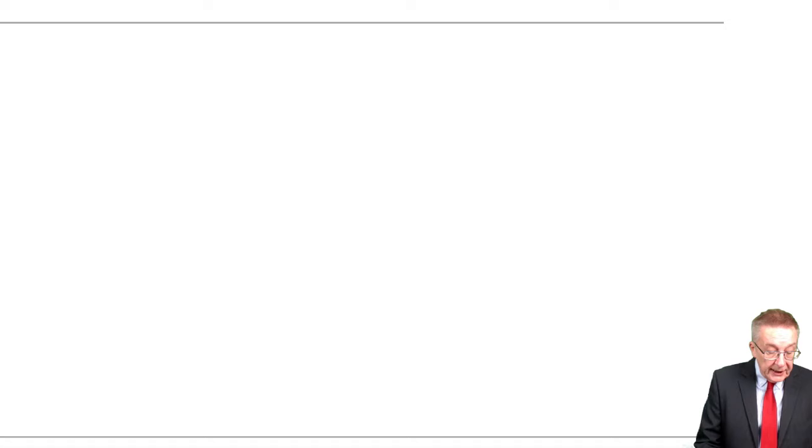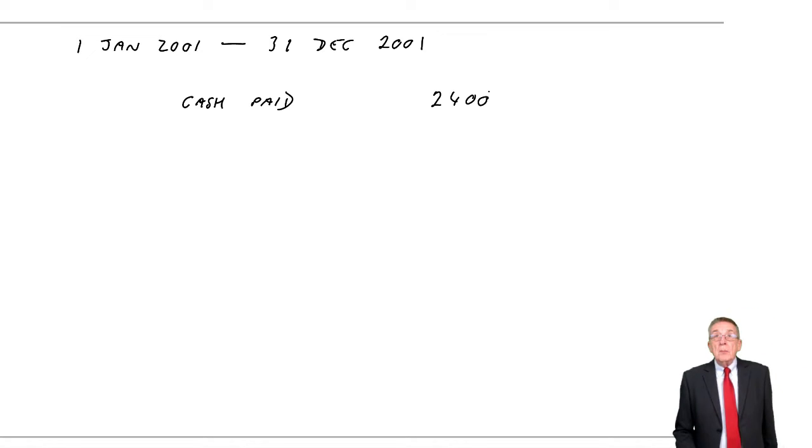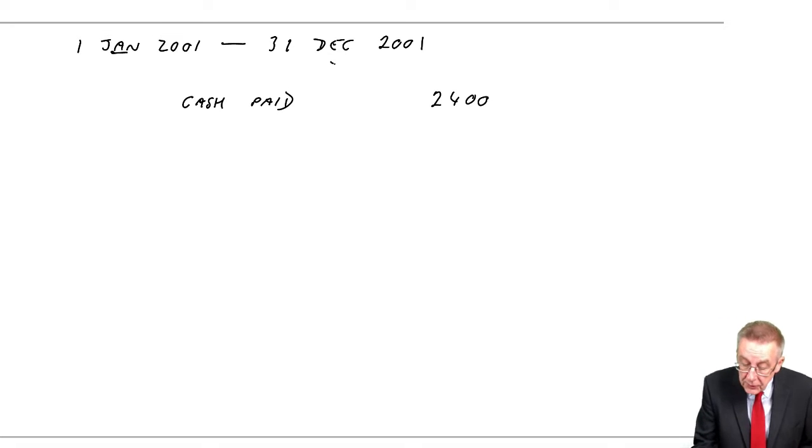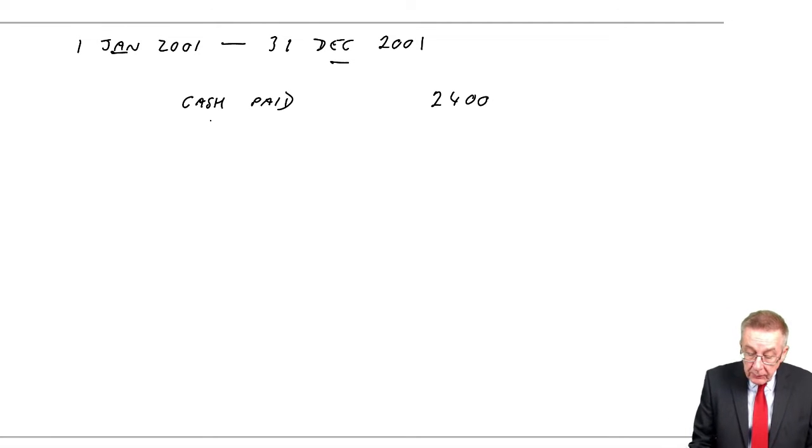During the year to 31st December 2001, Karen made the following payments in respect of insurance. On the 1st of July, she paid $2,400 for the period 1st July 2001 to 30th June 2002. Remember, keep Example 1 in front of you—it is the same question. In Example 1, she'd already paid all the way through to June 2001.